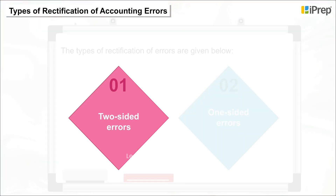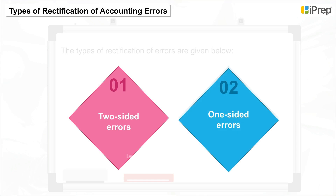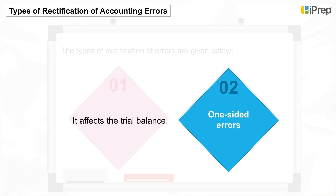1. Two-sided errors — these do not affect the trial balance. 2. One-sided errors — these affect the trial balance.